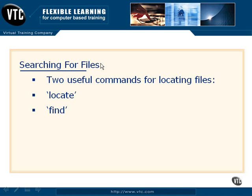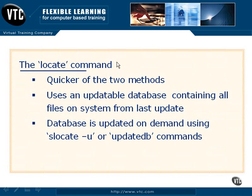Now that we've discussed some of the files you might find in your Linux operating system, we'd like to discuss how you would locate files if you didn't know where they were in the file system structure. There are a couple of different options available. We're going to talk about the locate command and then the find command. The locate command is a lot easier and faster — it's probably your method of preference for a quick search, because the syntax is extremely easy and it has a cache database that updates each time the system updates. You can force the database to update using the slocate -u or updatedb commands.